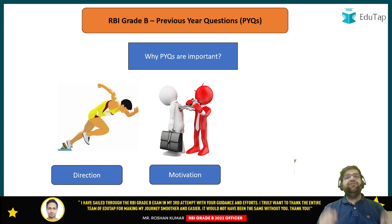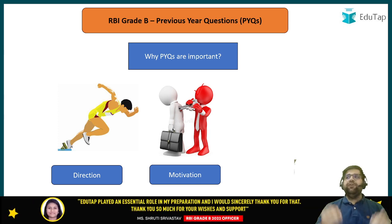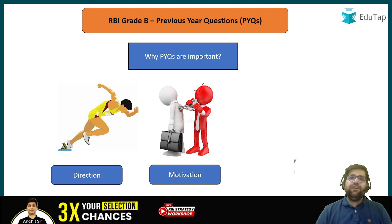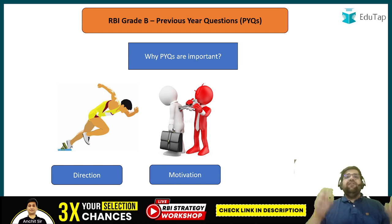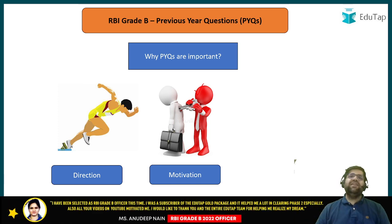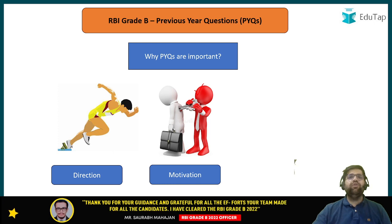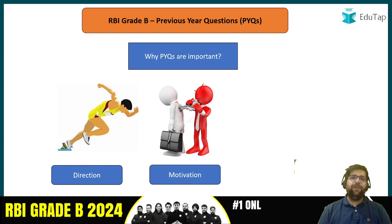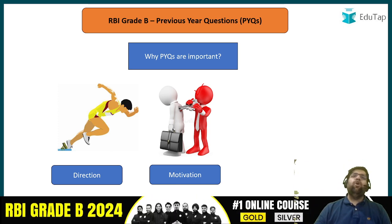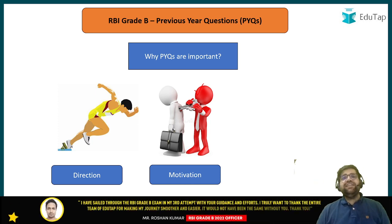The next reason is that previous year questions will give you direction. For example, if you are weak in quants and you are unable to solve previous year quant questions, that will give you a hint that you have to run faster and practice much harder in that domain. On the other hand, if you are good in reasoning and can solve all related previous year questions, then you can reduce your pace in reasoning and cover it on a weekly or alternate basis. Definitely, previous year questions will give direction to your timetable as well.